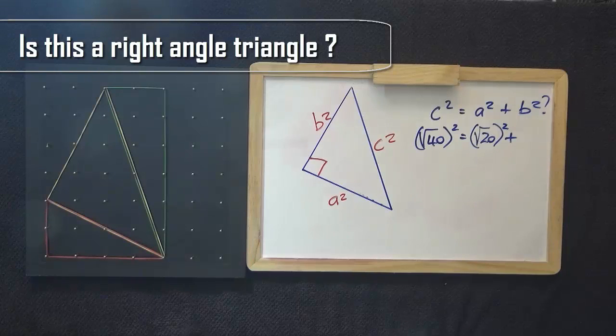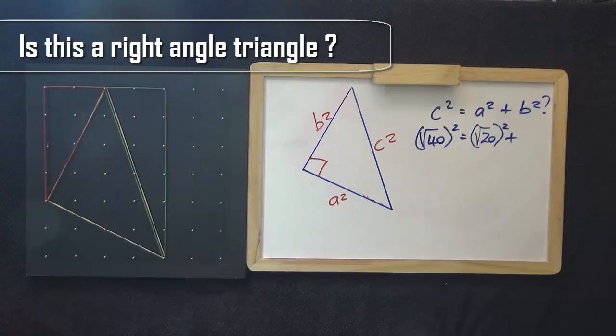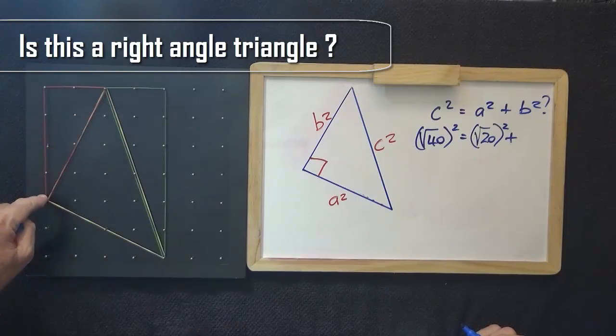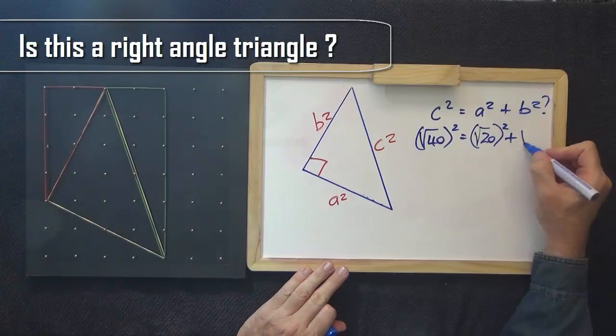And for our remaining side, it is the square root of 4 squared plus 2 squared, also the square root of 20.